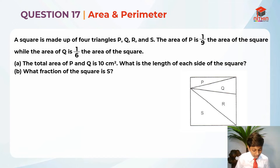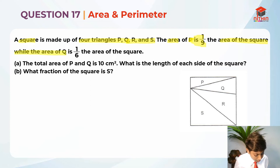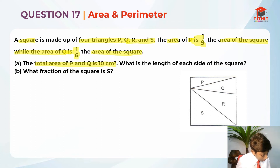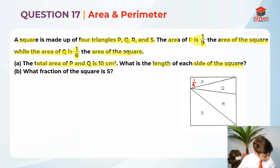Now that we're at Part A, let's highlight the key information. A square is made up of four triangles P, Q, R and S. The area of P is 1/9 of the square, and the area of Q is 1/6 of the square. The total area of P and Q is 10 cm².